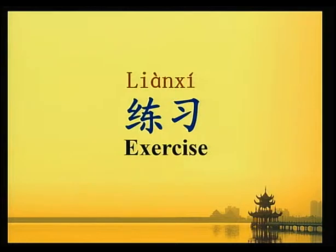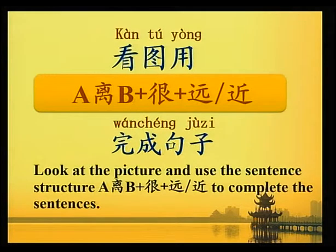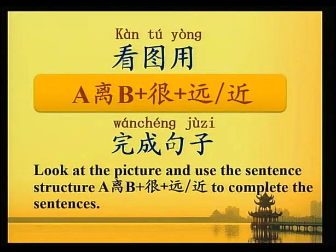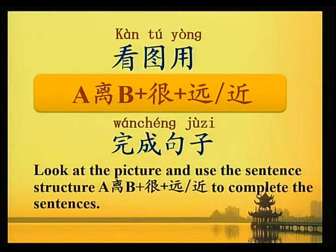练习 Exercise. 看图，用 A 离 B 很远/近 完成句子。Look at the picture and use the sentence structure A 离 B 很远/近 (A, Li, B plus Hen plus Yuan/Jin) to complete the sentences.